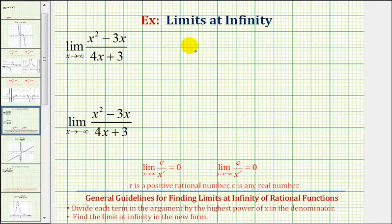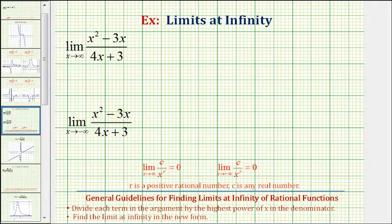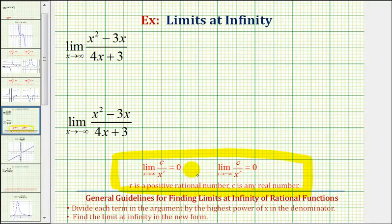Now we'll look at an example of determining limits at infinity of rational functions. There are some shortcuts we can use, but before we do this, it's important that we understand these two basic limits. The limit as x approaches positive infinity or negative infinity of c divided by x to the power of r is always equal to zero, where r is a positive rational number and c is any real number.